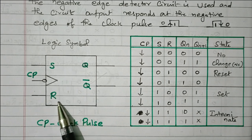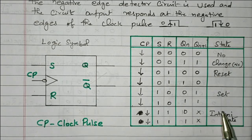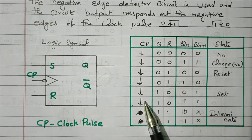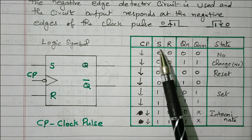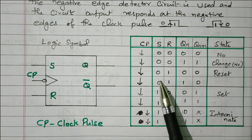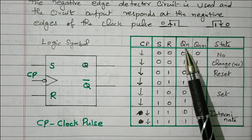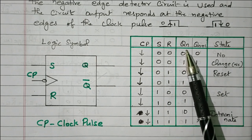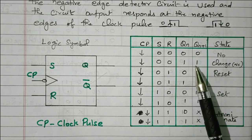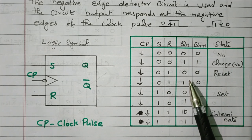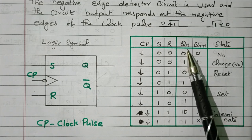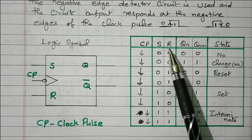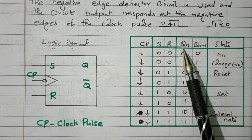SR stands for set-reset. In the truth table, the clock pulse going down represents the negative edge. There are two inputs — set and reset — giving four input combinations: 00, 01, 10, 11. The output Qn+1 (next state) depends on the present state Qn as well as the two inputs S and R. With three variables, there are eight possibilities (2³ = 8).